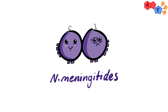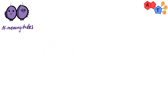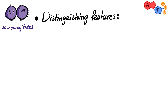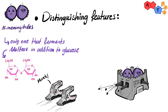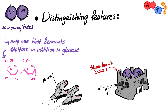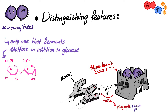Now let's talk about Neisseria meningitidis specifically. The first unique feature distinguishing it from other Neisseria species is that it's the only one that ferments maltose in addition to glucose, while other Neisseria species ferment glucose only. You can remember this from the M in its name. Another differentiating feature is its polysaccharide capsule, which inhibits phagocytosis and is a very important virulence factor.